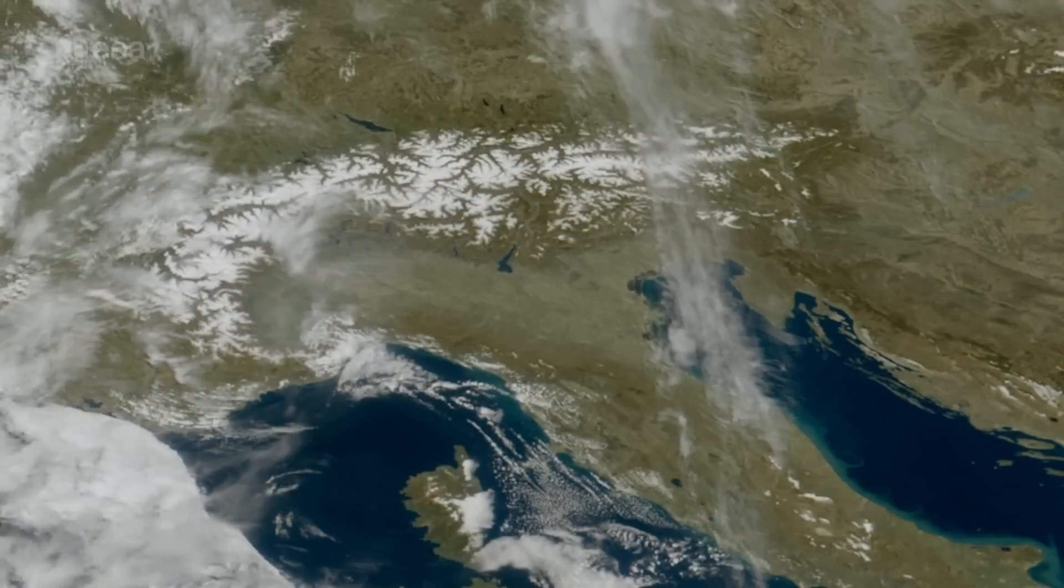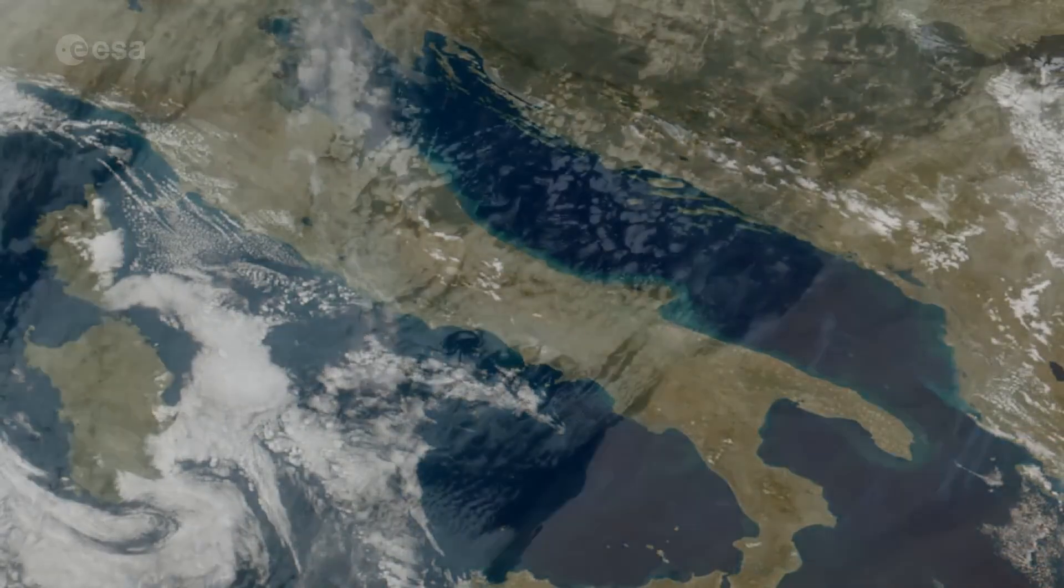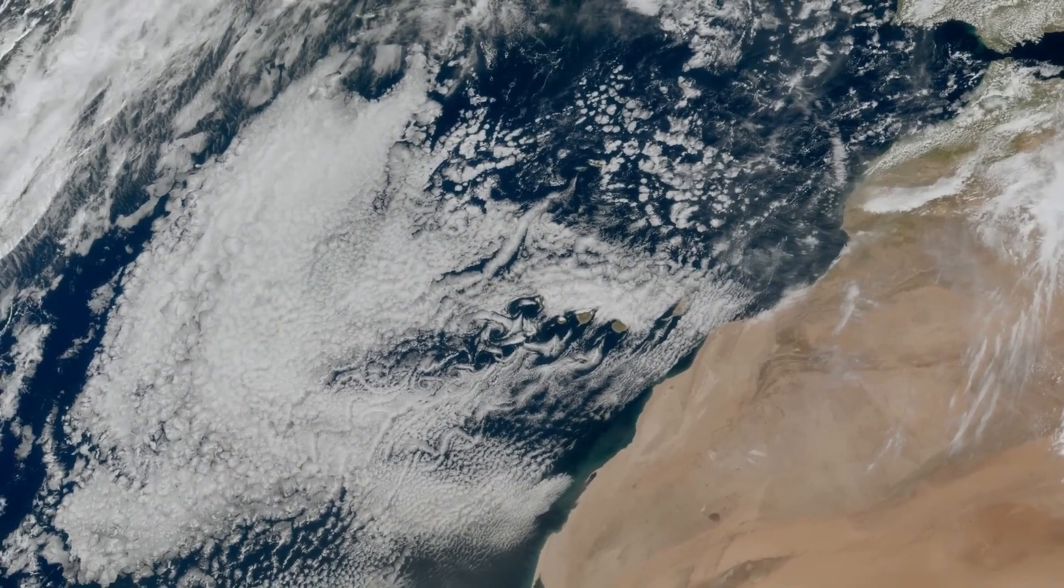Details such as snow cover on the Alps, sediment in the water along the coast of Italy, and cloud vortices over the Canary Islands are visible.